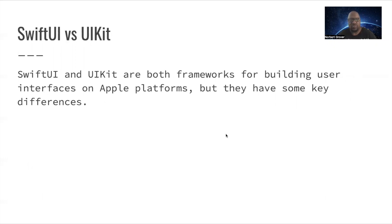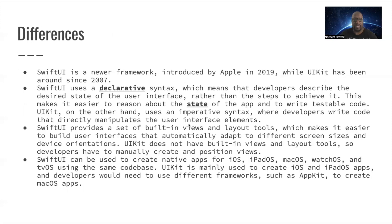Let's talk about SwiftUI versus UIKit, because right now the industry is transitioning to SwiftUI. SwiftUI and UIKit are both frameworks for building user interfaces on Apple platforms, but they have key differences. SwiftUI is the newer framework, introduced in 2019, while UIKit has been around since 2007. SwiftUI uses a declarative syntax, which means developers describe the desired state of the user interface rather than the steps to achieve it, making it easier to reason about app state and write testable code.